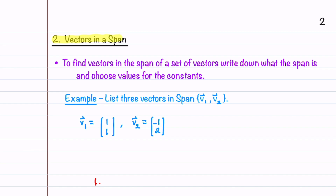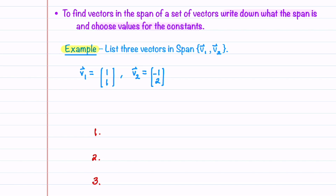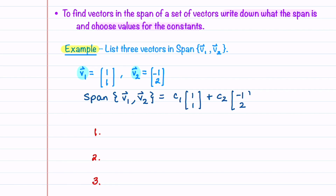Let's now learn how to find other vectors that are in the span of a set of vectors. To find vectors in the span, we write down what the span is and then choose values for the constants. Using the same vectors v1 and v2 from before, the span equals c1 times (1, 1) plus c2 times (-1, 2). We can choose the first vector by setting c1 equal to 0 and c2 equal to 0, which gives the vector (0, 0).